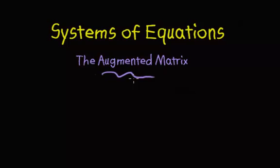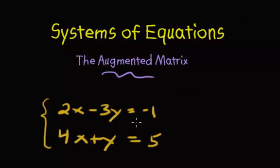So, augmented matrix. This is going to be a relatively short video because we're not actually going to solve it when it's in the matrix form. We're just going to get it set up. So, let's take a look at our first matrix. Okay, so our system has two equations and two variables. Our first equation, 2x minus 3y equals negative 1. And then we have 4x plus y equals 5.